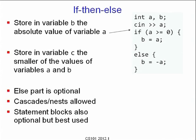For example, suppose I want to store in variable b the absolute value of variable a. I can say 'int a, b', then read a from cin. If a is greater than or equal to 0, then b is just a; otherwise b is assigned minus a.